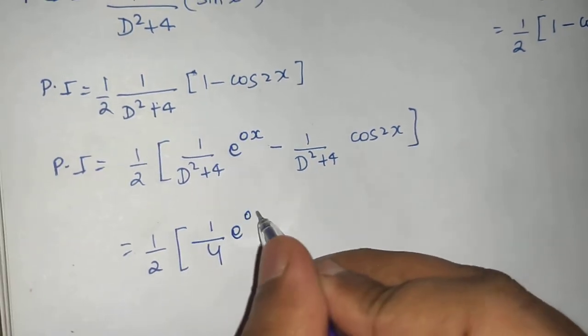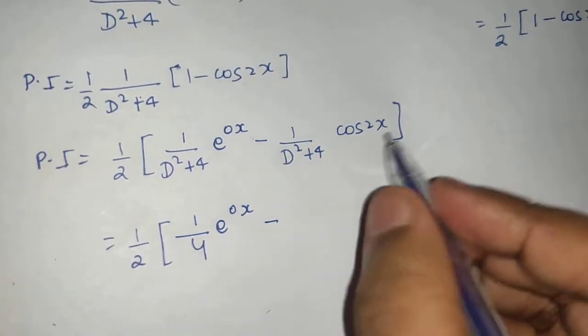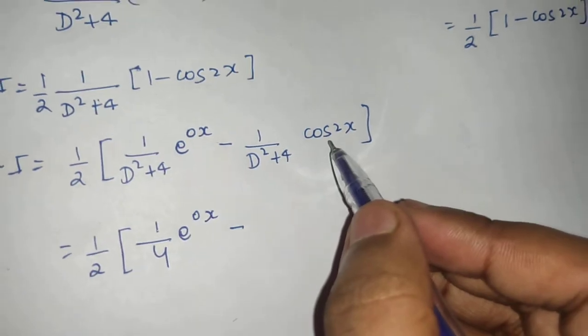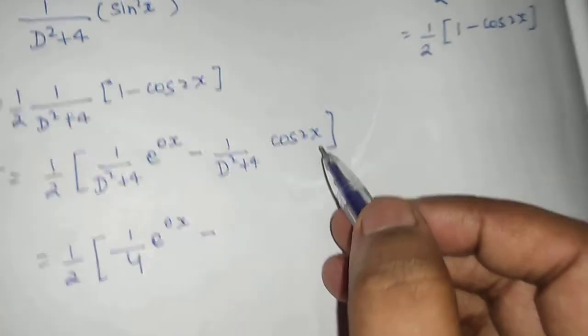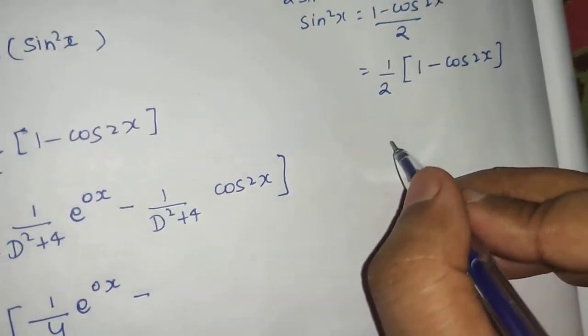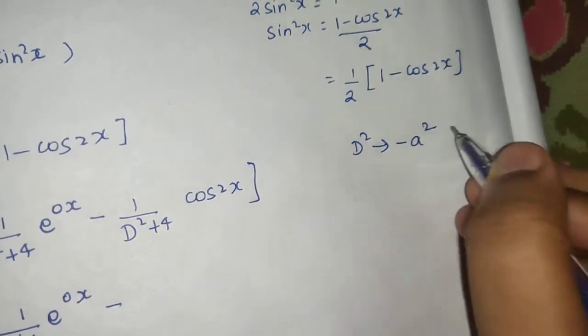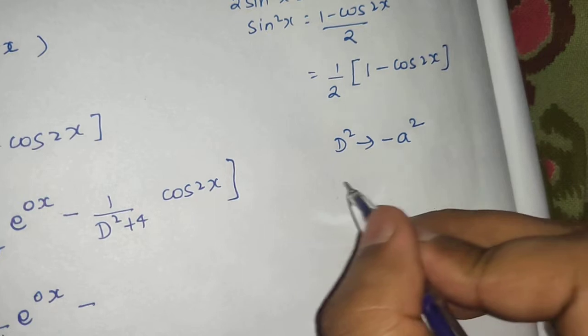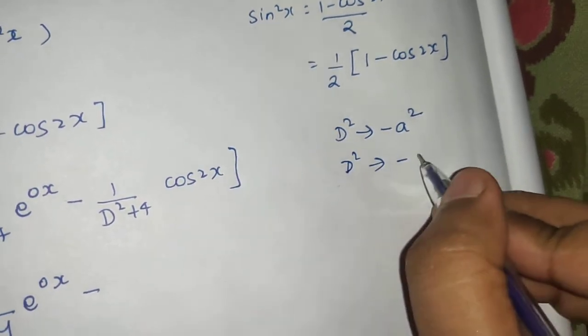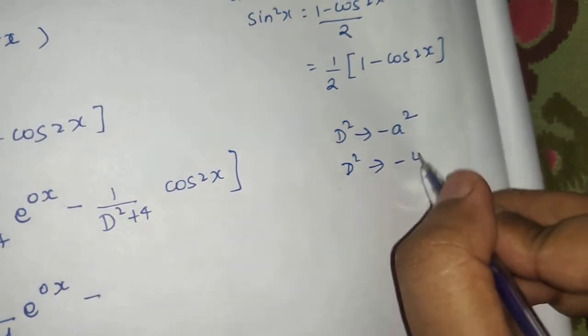Minus - what is rule for cos 2x? We replace d square by minus of a square. A here is 2, so we will replace d square by minus of a square, which is 4.